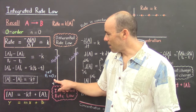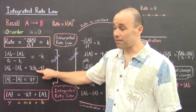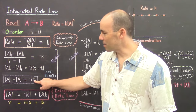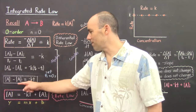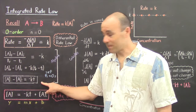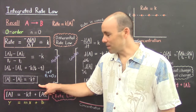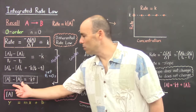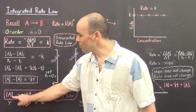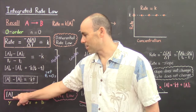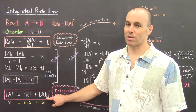With initial time set to zero, the minus zero can be ignored. And instead of calling it the final time, we'll just call it the time. Instead of calling it the final concentration, we'll call it the concentration. And so we have this simpler equation. To get to the final form, let's go ahead and move our initial concentration over. We're left with the integrated rate law, which tells us that the concentration equals negative k times t, plus the initial concentration.